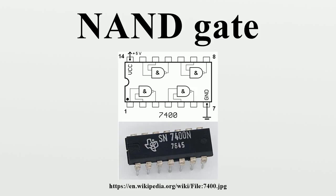Symbols. There are three symbols for NAND gates: the MIL-ANSI symbol, the IEC symbol, and the deprecated DIN symbol sometimes found on old schematics. For more information, see logic gate symbols. The ANSI symbol for the NAND gate is a standard AND gate with an inversion bubble connected.